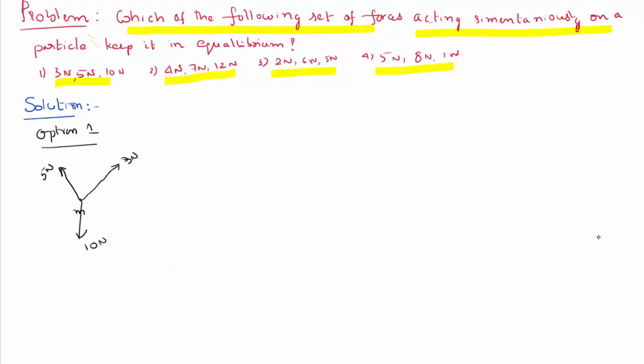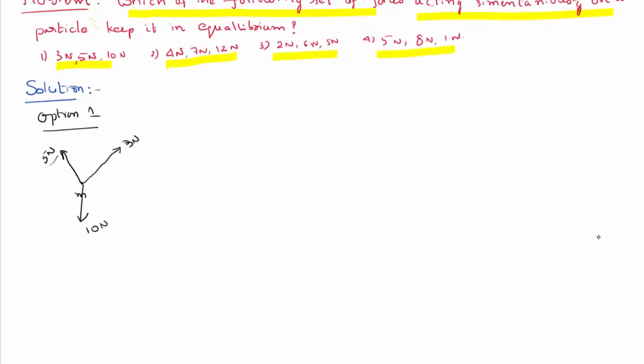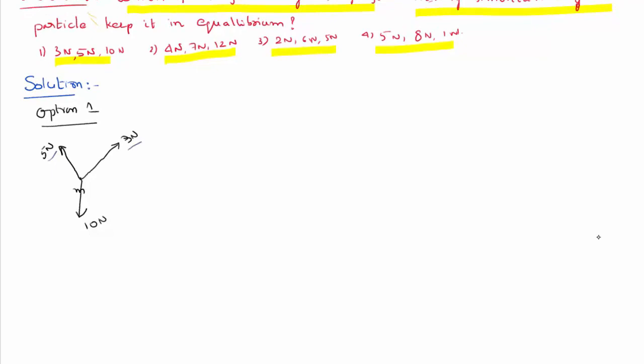There are two forces acting, one is 5 Newton, another one is 3 Newton. Then this 3 and 5 at the best can apply a maximum force. When the angle between the two vectors is zero, the resultant is P plus Q, so they can give you at the best 8 Newton.